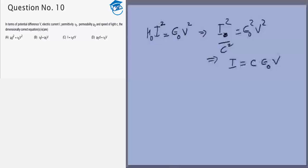V by I is R, so we get R is equal to 1 by c ε₀. Now I'm just going to write the dimensions for all of them and try to find the answer.